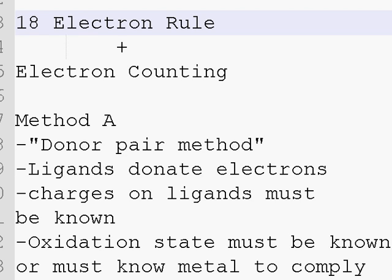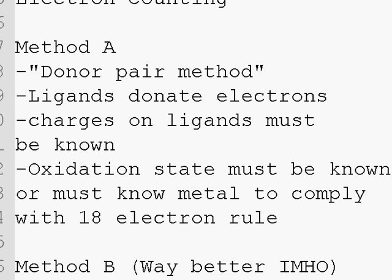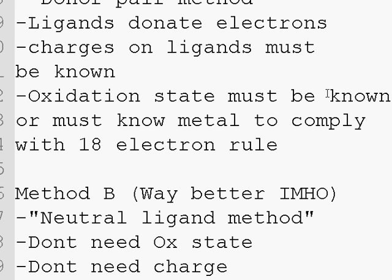There are two methods the way people look at this, creatively referred to as method A and method B. Method A is the donor pair method, and the way you look at this with method A is you think of the ligands donating electrons. So the charges on the ligands must be known if you're going to have the ligands donate electrons. And also the oxidation state on the metal must be known, or you must know the metal to comply with the 18 electron rule, and then you can just figure out by some math what the oxidation state is.